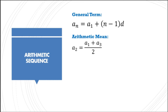For the arithmetic mean, we have: a sub 2 equals (a sub 1 plus a sub 3) over 2. This is only applicable if we just need to insert one arithmetic mean, since we are simply getting the average of two numbers. However, if we need to insert three or more arithmetic means, we need to identify the value of the common difference first in order to get the arithmetic means.